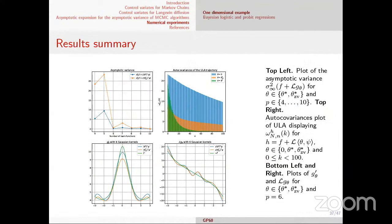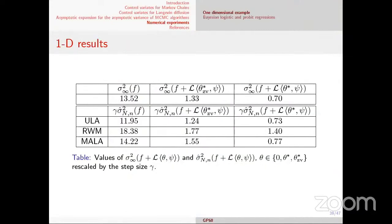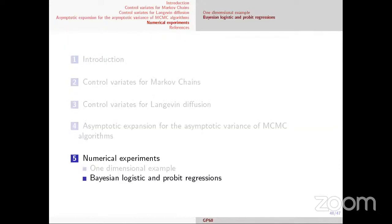We have also other examples: Bayesian logistic regression and many more. We have a preprint — the paper has been available for at least two years — with many more examples including systems of ODEs for Bayesian statistics, and Bayesian analysis with diffusions. It works very well in all these cases.